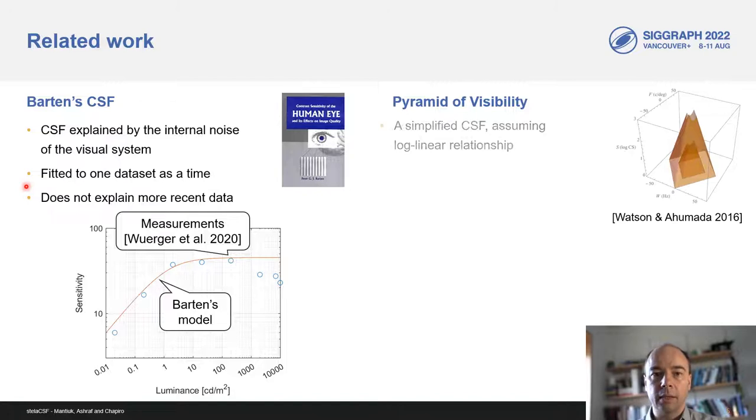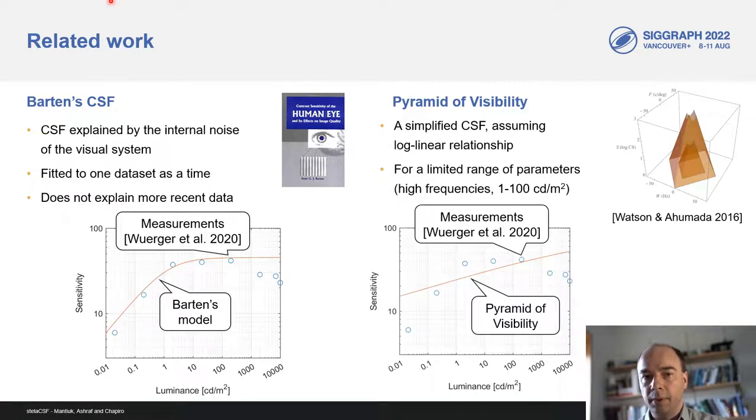Another popular model is the pyramid of visibility. It's a simplified model that assumes that the sensitivity can be explained by logarithmic or linear relations. The main attraction of the pyramid of visibility is its simplicity. The main problem is that the predictions are valid for a rather limited range of CSF parameters. For example, for luminance, we could perhaps make predictions between 1 and 100 candela per square meter, but anything beyond that range would be largely incorrect.